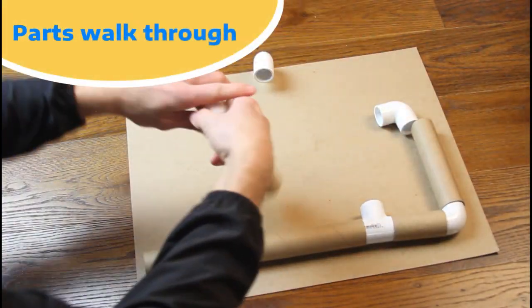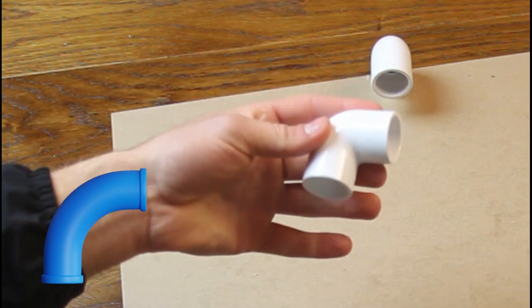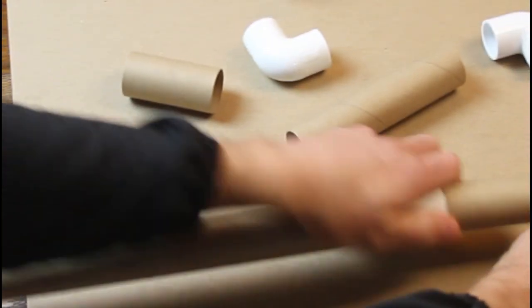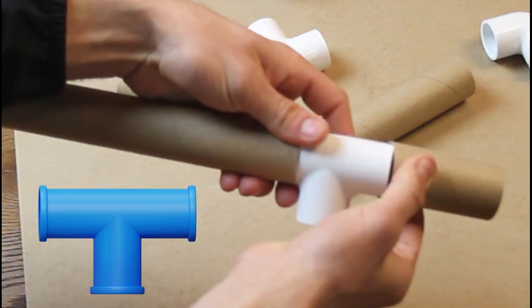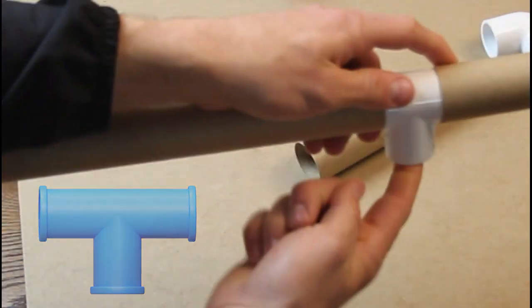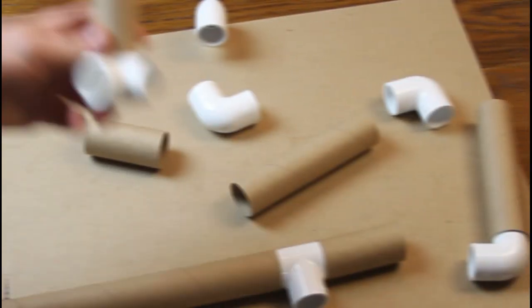These are called 90 degree elbows and they help your cardboard tubes make a right or a left turn. And this one is called a PVC T which allows the pipes to continue going straight but also give an outlet. This can either go towards the ground to spin a fan or it can make a turn and continue the duct work.